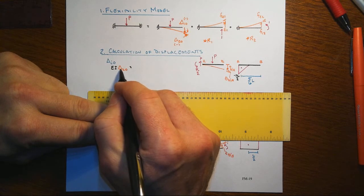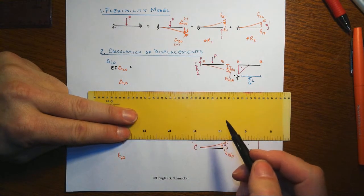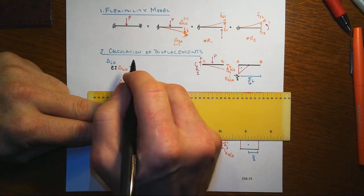Again, even though it looks like a delta, physically this is the rotation that's happening out here at the tip, and that's just the area under the M over EI diagram to give us the change.